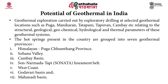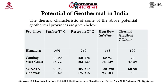The seven geothermal provinces are: Himalayan Puga, Chumtang Province, Sohana Valley, Kambi Basin, Son-Narmada-Tapi Lineament Belt (Sonata), West Coast, Godavari Basin, and Mahamdi Basin. In this table, you can see the thermal characteristics of the above potential geothermal provinces, and the Himalayan province has the highest values.